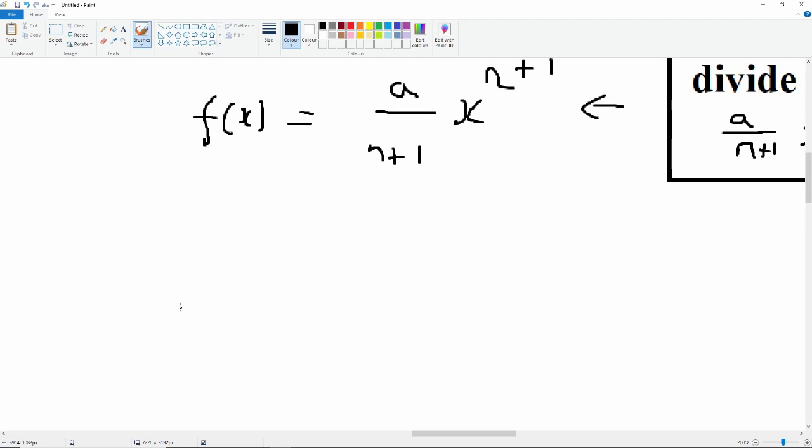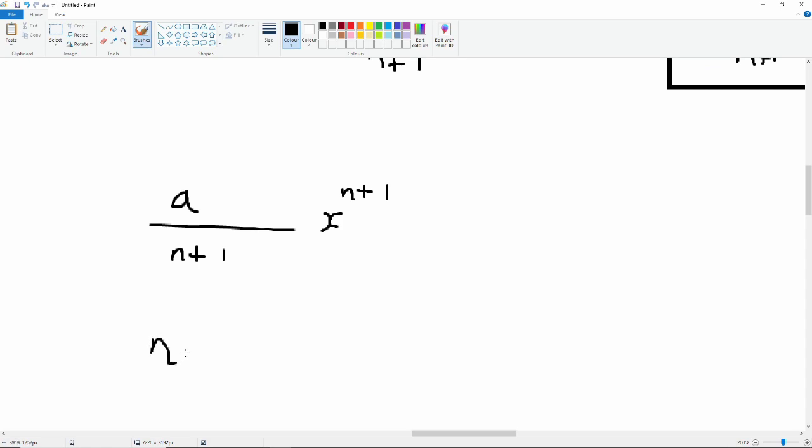Let's just try that. Let's take the derivative of a over n plus 1, x to the power n plus 1. So we're multiplying by n plus 1. So that's n plus 1 times a divided by n plus 1.